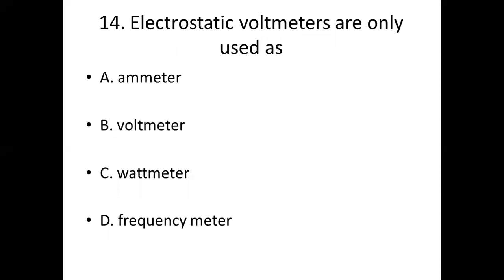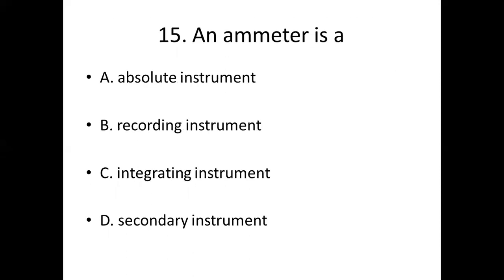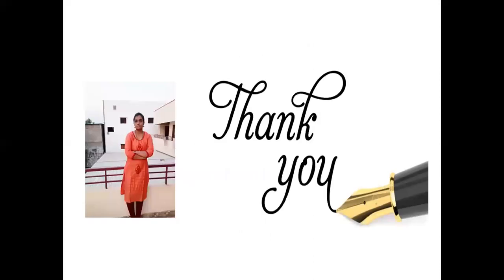Fifteenth bit. An ammeter is a: Option A, absolute instrument; Option B, recording instrument; Option C, integrating instrument; Option D, secondary instrument. Answer is D, secondary instrument. Thanks for watching.